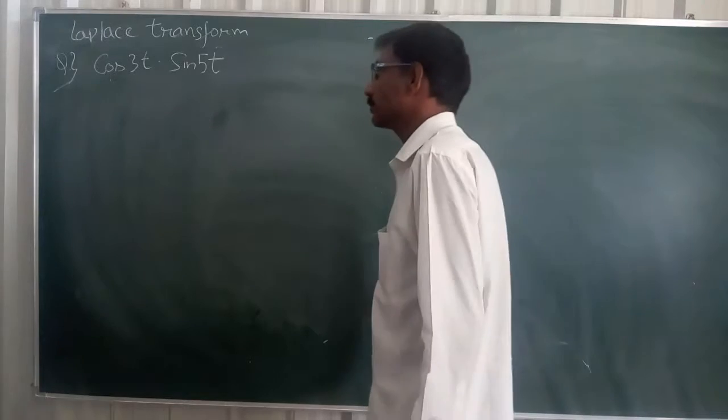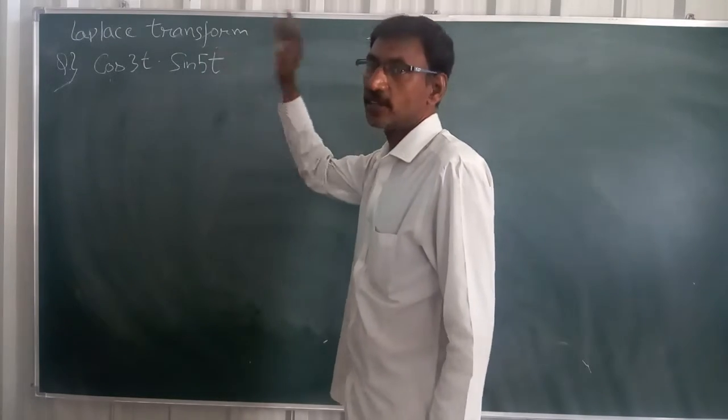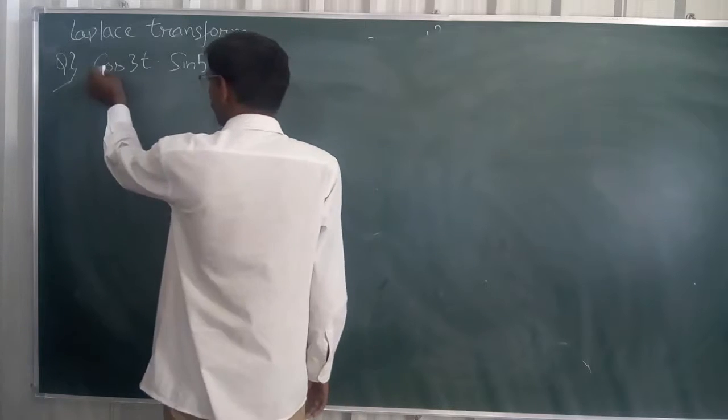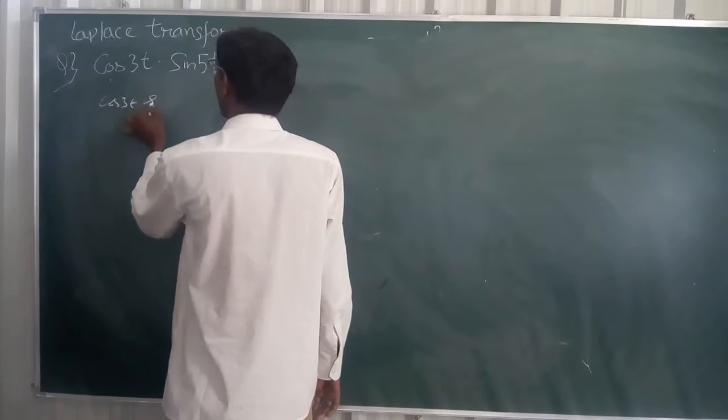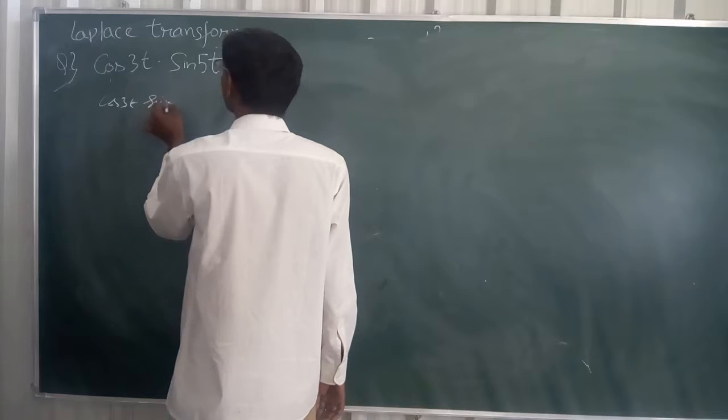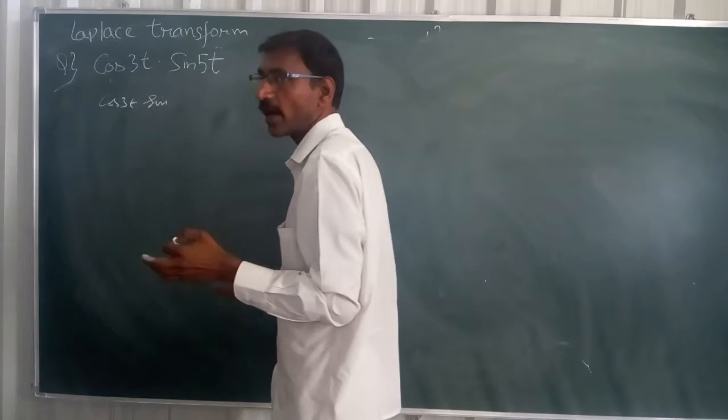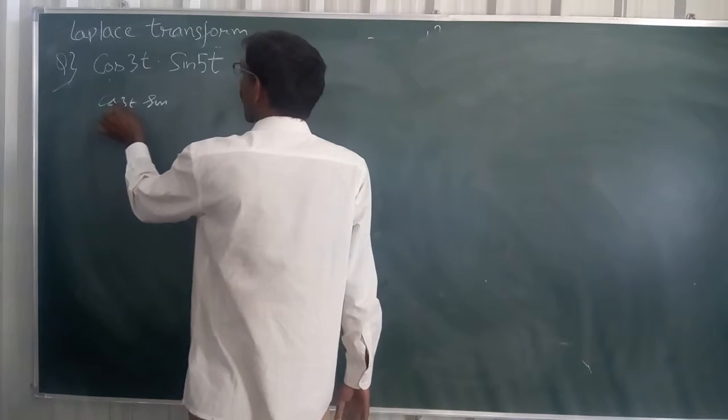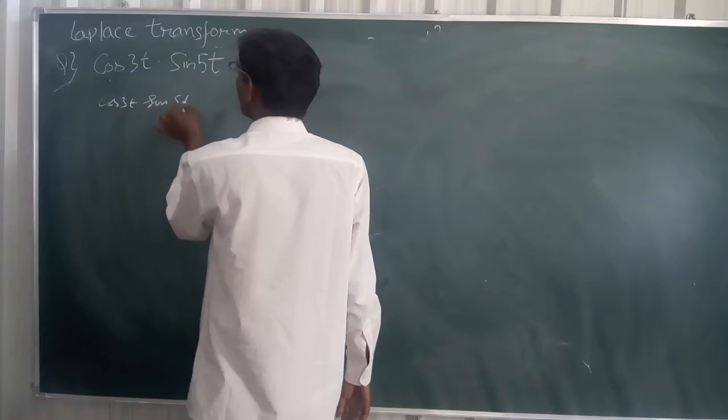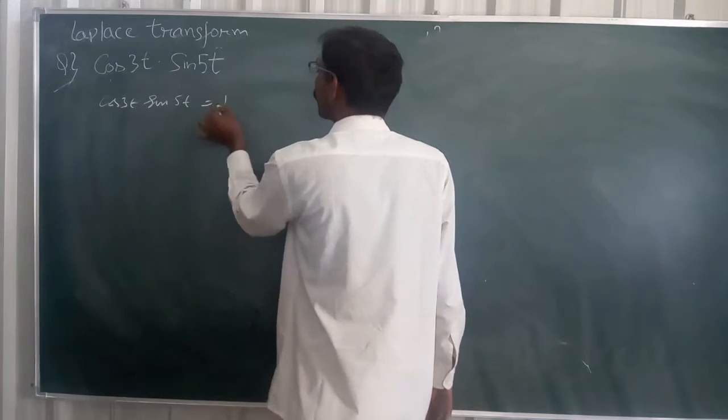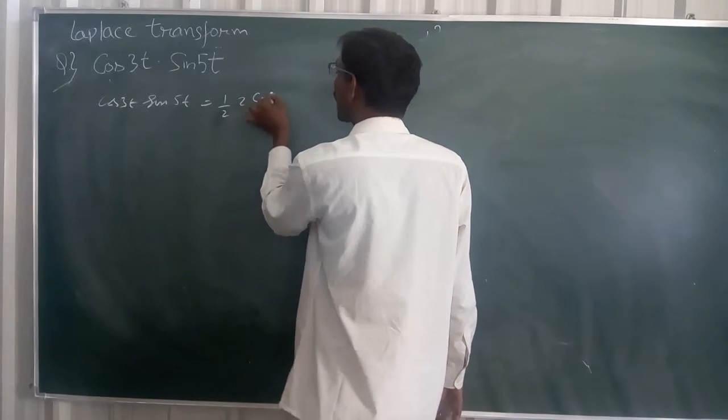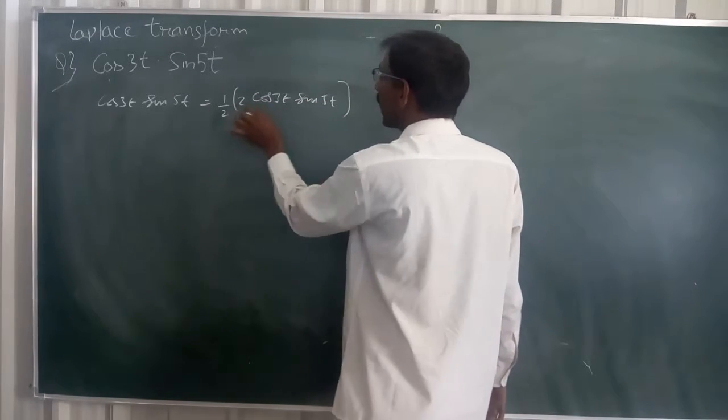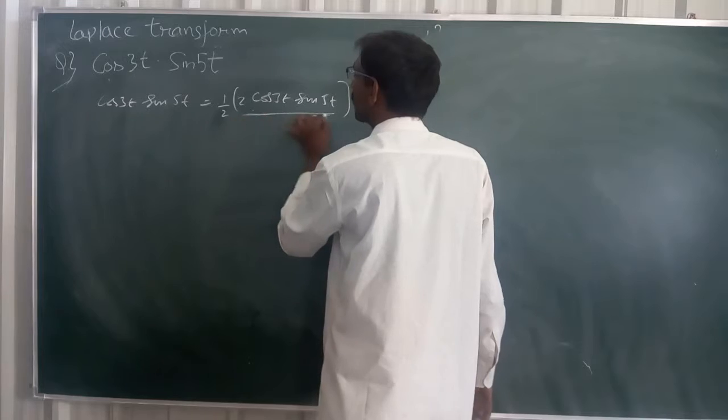Using Laplace transform, evaluate this one. So we have to take cos 3t plus sin 5t. I just consider this one, then after I would like to apply Laplace transform. I can write 1 by 2 into 2 cos 3t into sin 5t. By observing this part, this is the form of 2 cos a sine b, isn't it?